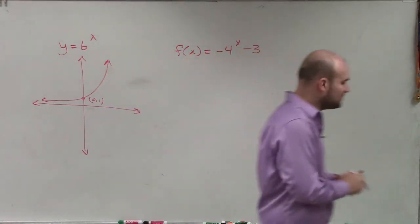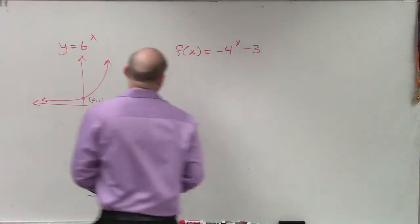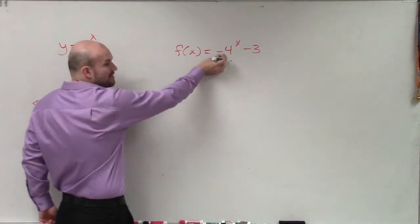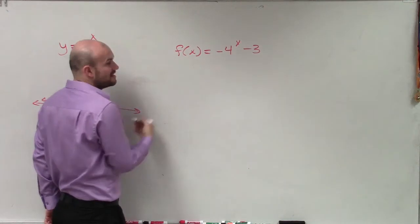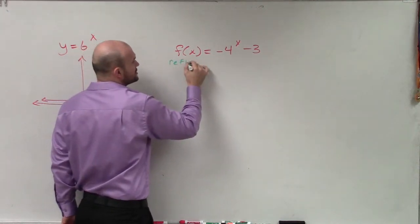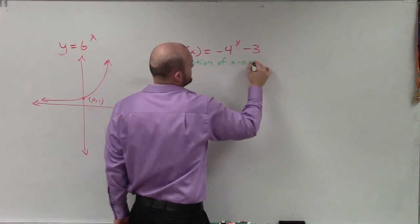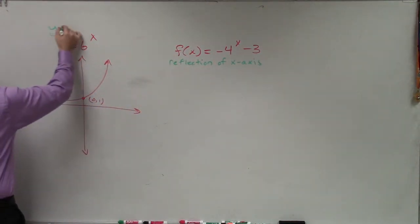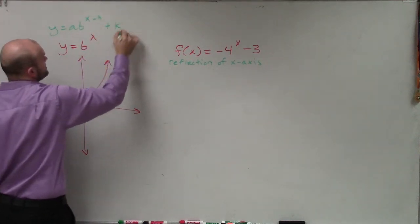So by looking at this equation, there's a couple things that I want to do. I want to be able to understand what the transformations are. The first transformation we notice is we have a negative b, or a negative a in our standard form. So we know this is going to be a reflection of the x-axis. If we were going to write this standard form, y equals a times b to the x minus h plus k.